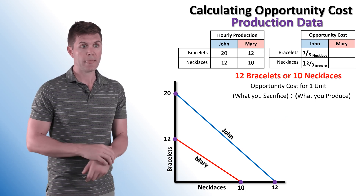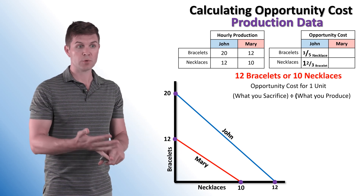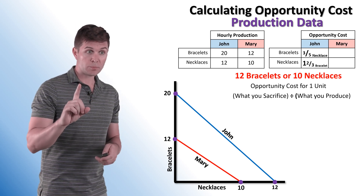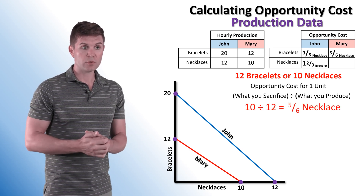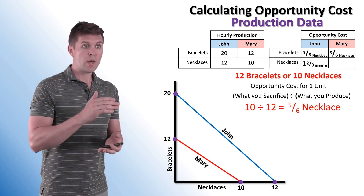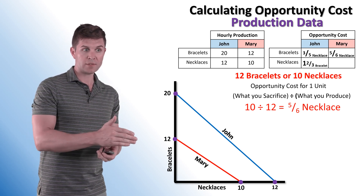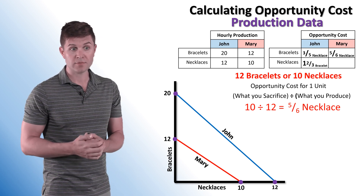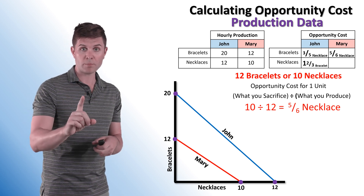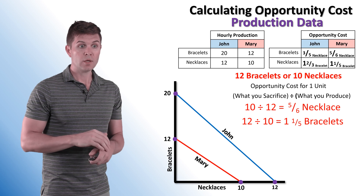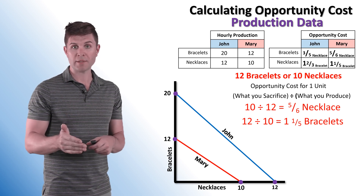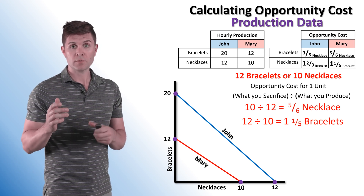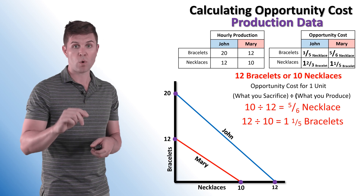Now let's go over this with Mary's information. We've been given production data: she can produce 12 bracelets or 10 necklaces in a given hour. For the opportunity cost of one bracelet, we sacrifice necklaces: 10 divided by 12 equals five-sixths of a necklace. So the opportunity cost of one bracelet is five-sixths of a necklace. For one necklace, we take 12 divided by 10 — bracelets divided by necklaces — which equals one and one-fifth bracelets. The opportunity cost of one necklace is one and one-fifth bracelets.